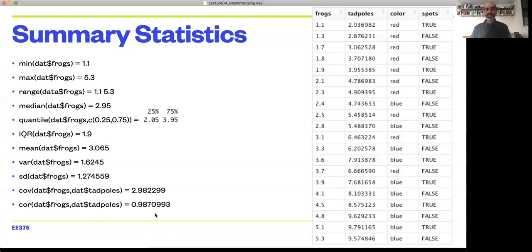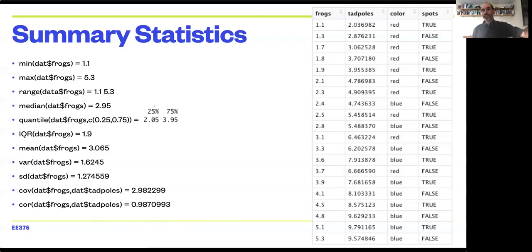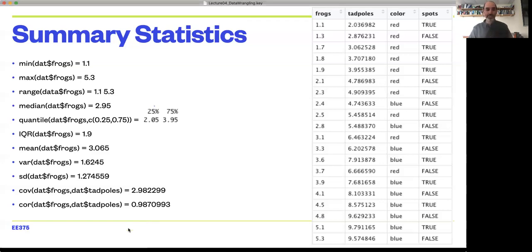And here we get a correlation coefficient 0.987, which is a very high correlation, because correlation can only go from one, a perfect positive correlation, to minus one, a perfect negative correlation with zero halfway in between, indicating no relationship between two variables. So this is a very strong relationship between frog and tadpole densities.